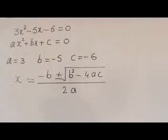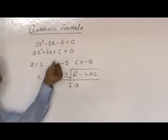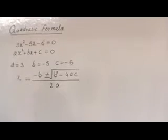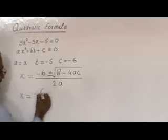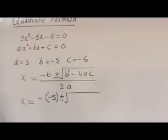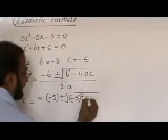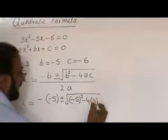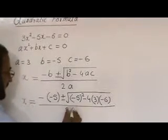Putting in the values A = 3, B = -5, C = -6 into the quadratic formula, we get x = (-(-5) ± √((-5)² - 4 × 3 × (-6))) / (2 × 3).